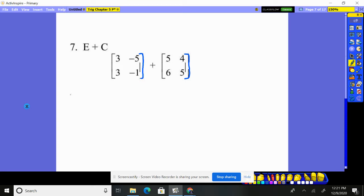Anyway, we want to add these guys. Adding, piece of cake, no challenge. Top left with top left, eight. Just like you would think, negative five and four is negative one. Three and six, nine. Negative one and five, four. Done.